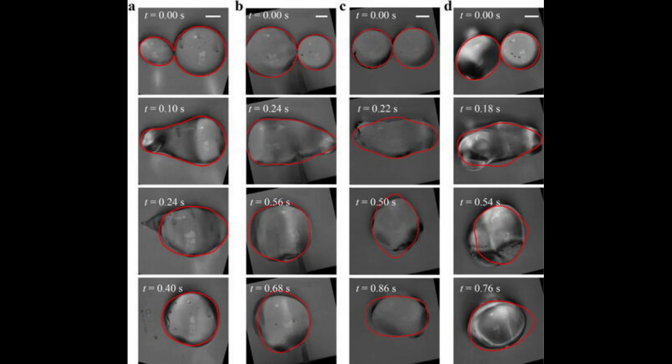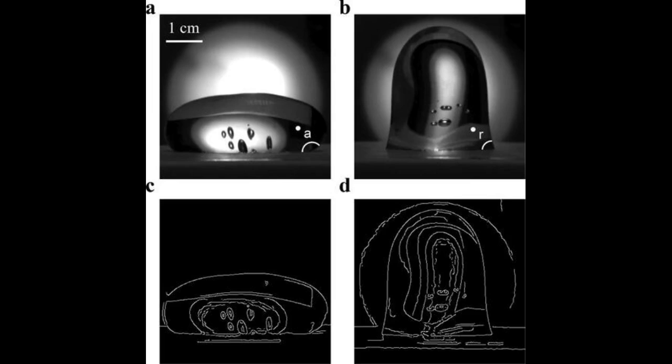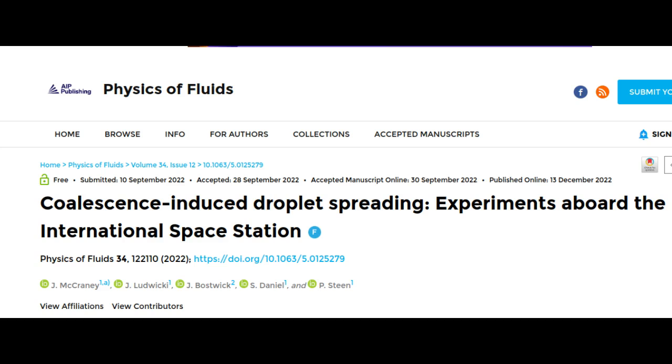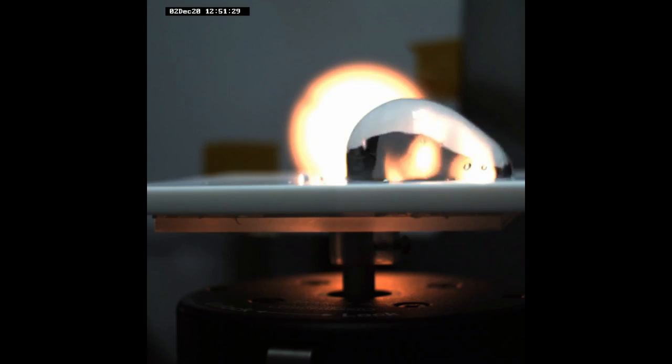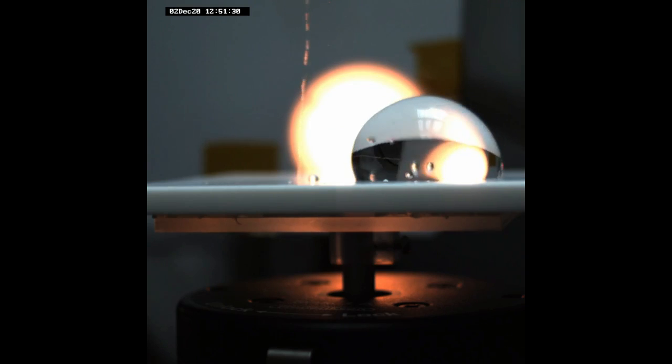However, these phenomena are difficult to model and challenging to observe experimentally. In the journal Physics of Fluids by AIP Publishing, researchers from Cornell University and Clemson University designed and analyzed droplet experiments that were done on the International Space Station ISIS.